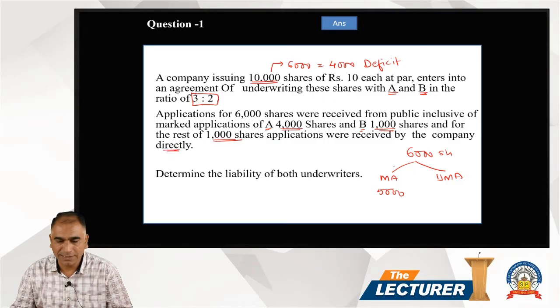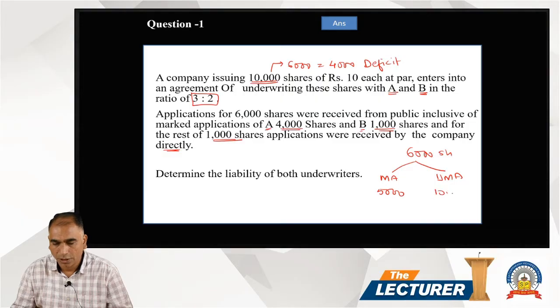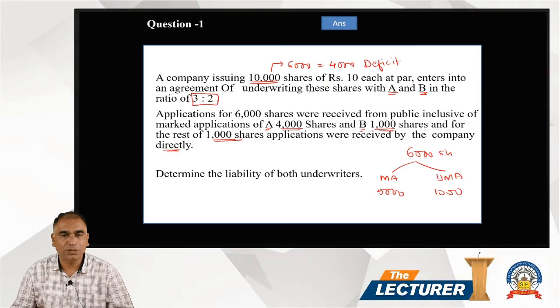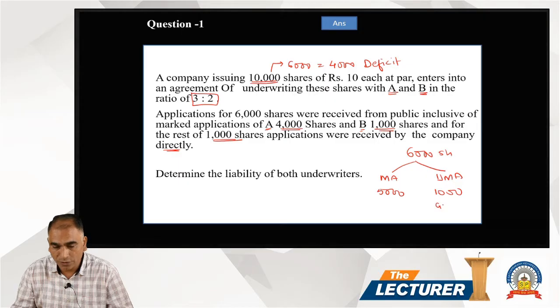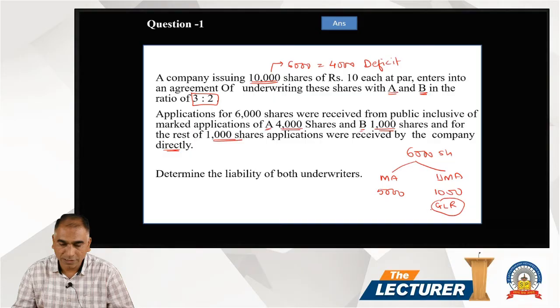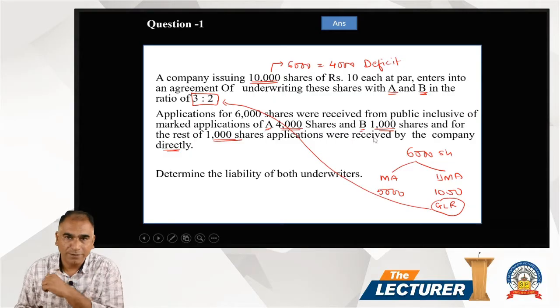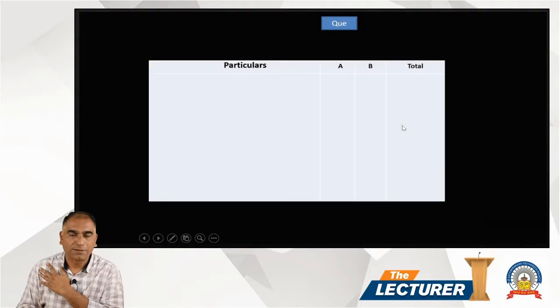So 5,000 marked applications, 1,000 unmarked application. Distribution: A 4,000, B 1,000. The gross liability ratio is 3:2. Now if you see how we calculate it, first of all, gross liability is 10,000.